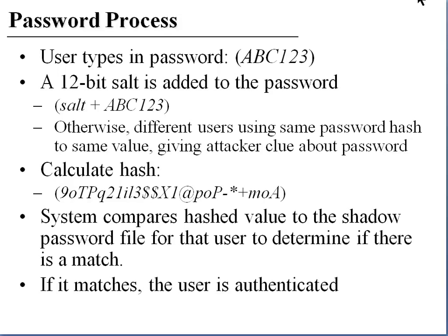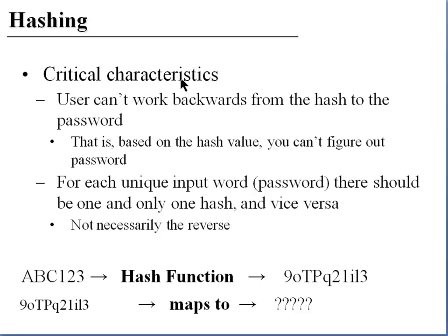The critical characteristics of a hashing algorithm are that someone cannot move backwards from the hash to the password — hashes are one-way functions. That is, every time you input ABC123 and apply the hash function, it will always result in the same hash. However, knowing the hash does not provide any information about the password that was used.